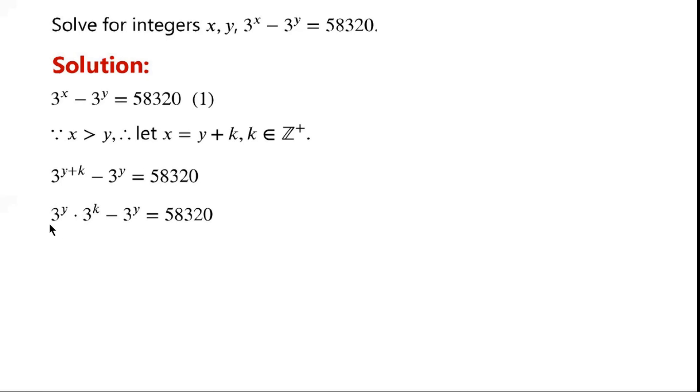3 to the power of y plus k can be written as 3 to the power of y times 3 to the power of k. Now we can see that the two terms have a common factor, 3 to the power of y.